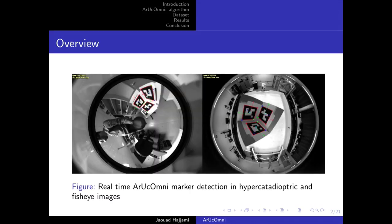AruCo Omni is a generalization of marker detection library for catadioptric and fisheye images as you can see in this slide, and it also works on perspective images because we consider the unified central projection model. It runs in real-time on off-the-shelf CPUs.